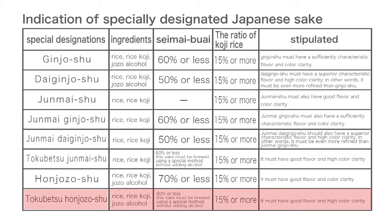Tokubetsu honjōzō-shu: the ingredients must be rice, rice koji, and jozo alcohol. It must have a polishing ratio of 60% or less. The ratio of koji rice must be 15% or more. It must have good flavor and high color clarity.